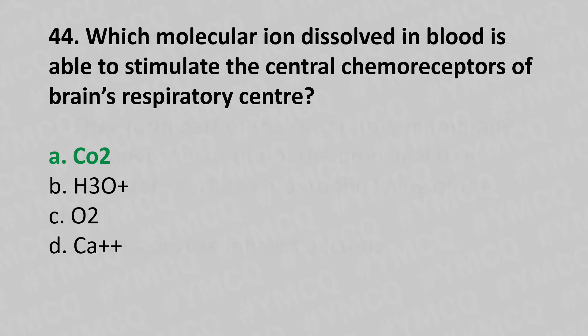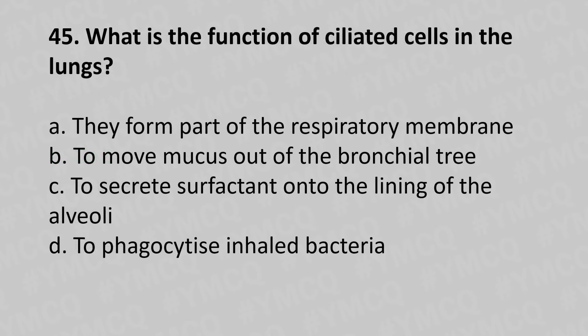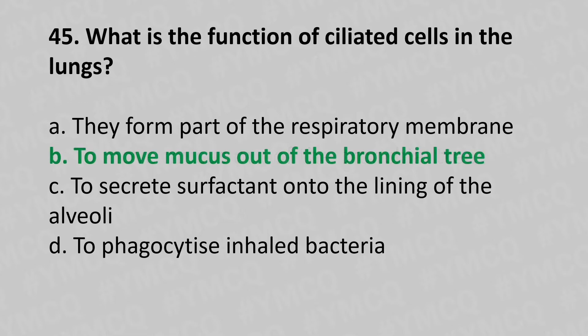Now let's move to question number 45. What is the function of the ciliated cells in the lungs? Option A: They form a respiratory membrane. Option B: To move mucus out of the bronchial tree. Option C: To secrete surfactant onto the lining of the alveoli. Option D: To phagocytose inhaled bacteria. And the answer is Option B, to move mucus out of the bronchial tree.